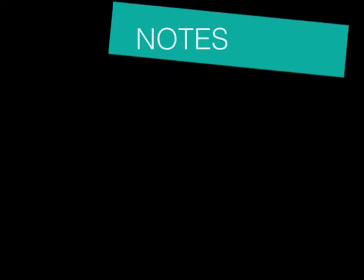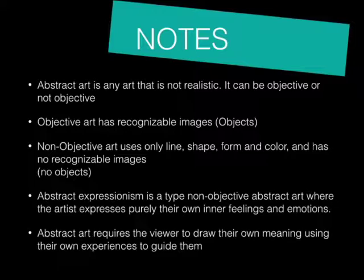In summary: abstract art is any art that's not realistic. It can be objective or non-objective. Objective art has recognizable images or objects. Non-objective art uses only line, shape, form, and color, and has no recognizable images or objects. Abstract Expressionism is a non-objective abstract art where the artist expresses purely their own inner feelings and emotions. Abstract art requires the viewer to draw their own meaning, using their own experiences to guide them.